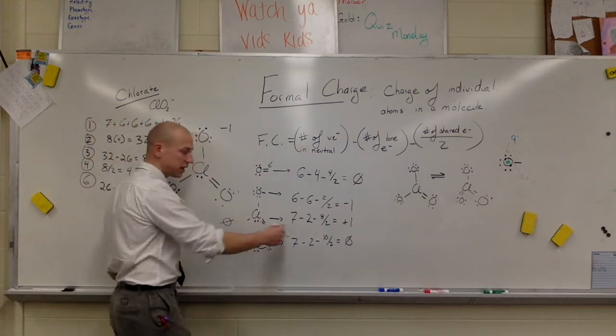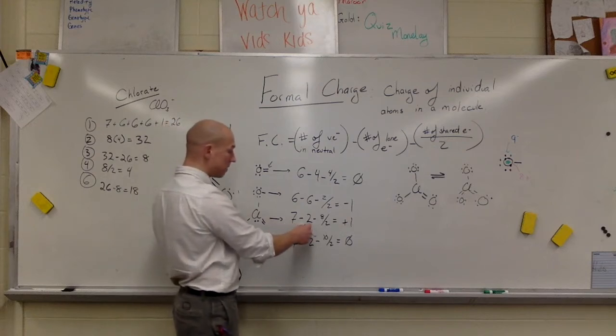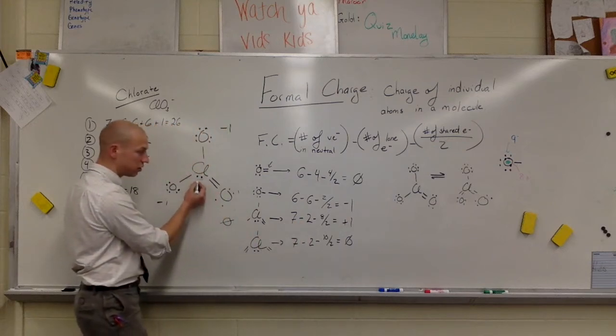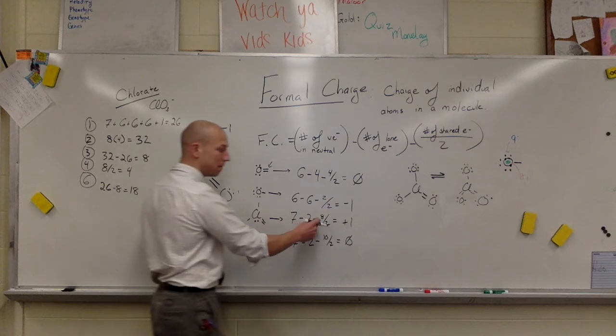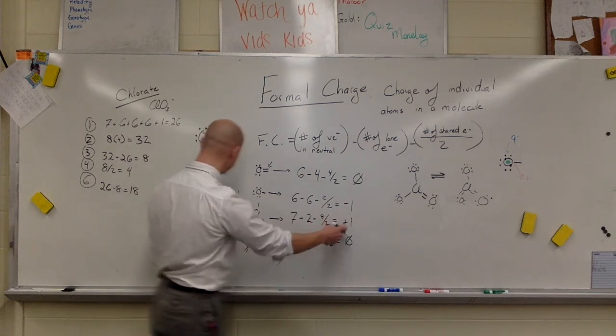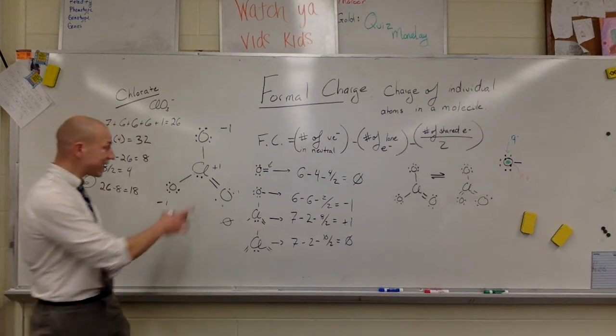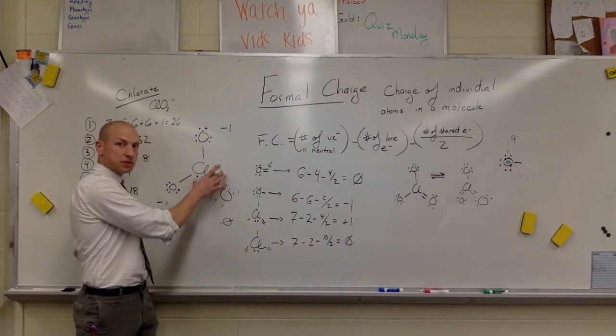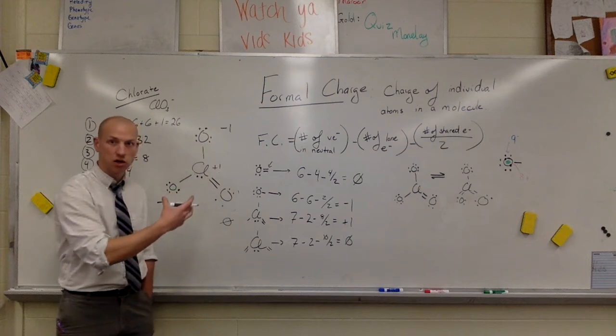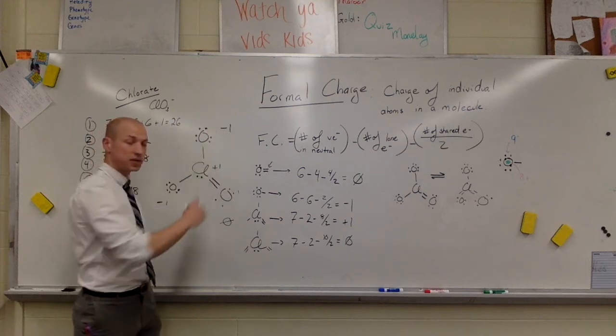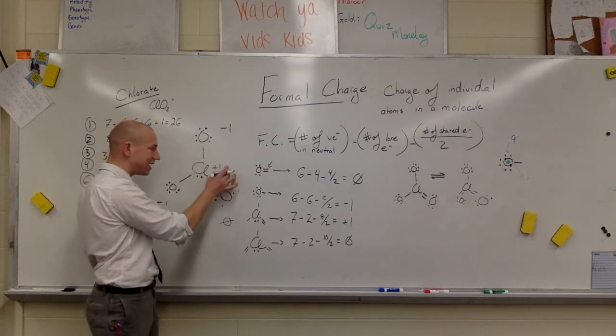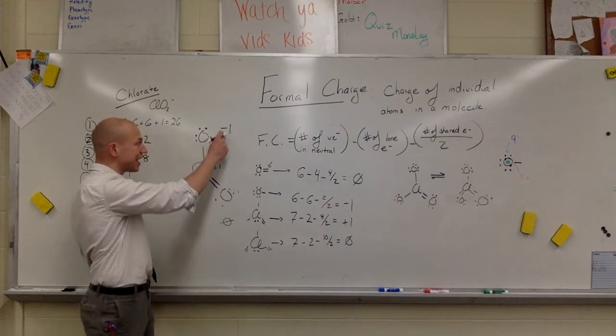But if we look at the chlorine, that's seven in its neutral state, minus two unshared electrons here, minus eight shared electrons over two, it gives us a formal charge of plus one. Now, this means that this has more protonic charge than it has electronic charge from the electrons. That means it's got a greater positive charge here than it does negative charge here.